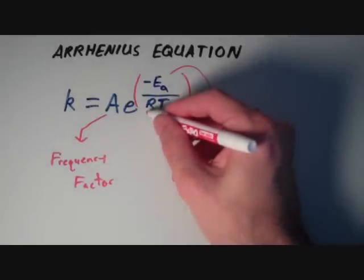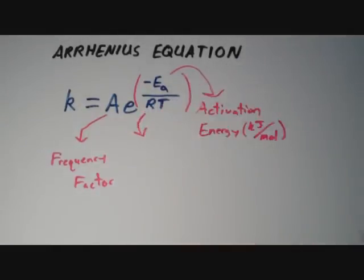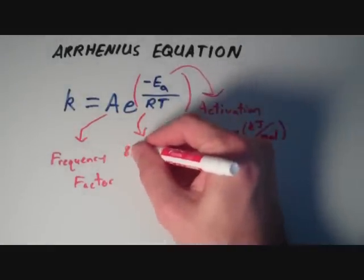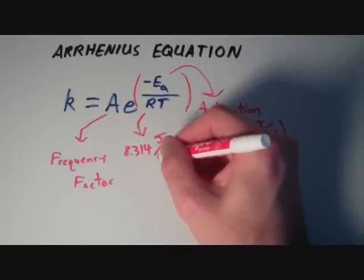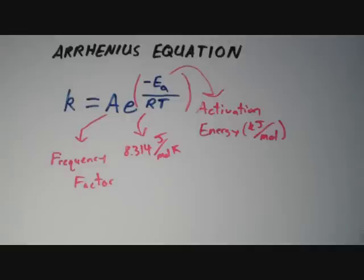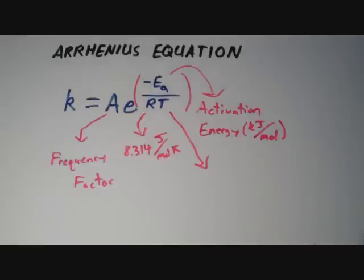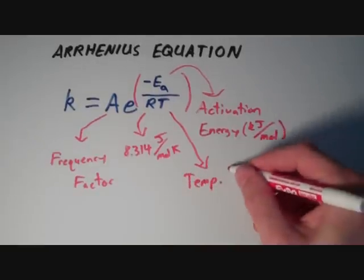And R is the gas constant. So when you see the equation, for instance, PV equals NRT for gas laws, we're talking about the same R. And this R just happens to be 8.314 joules over moles times kelvins. And T is the absolute temperature in Kelvin.